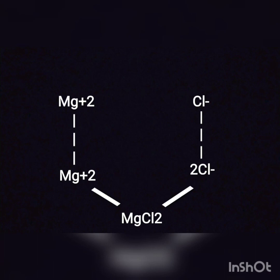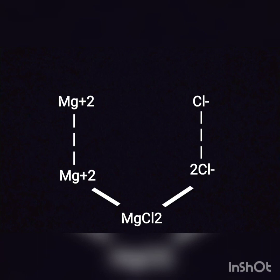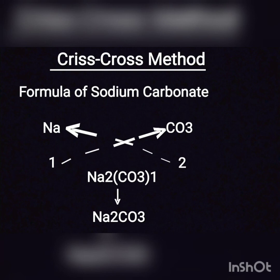For example, to write the formula for magnesium chloride: magnesium (Mg) has a valency of 2 and chlorine (Cl) has a valency of 1. To balance the charges, we need 2 chlorine atoms for every 1 magnesium atom. So the chemical formula of magnesium chloride is MgCl₂.